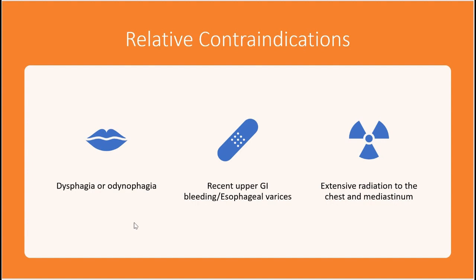These are the relative contraindications to TEE. If the patient has dysphagia or odynophagia, recent upper GI bleeding or history of esophageal varices, or extensive radiation to the chest and mediastinum — these patients would first need GI evaluation and clearance before proceeding, as they can have strictures or masses in the esophagus.